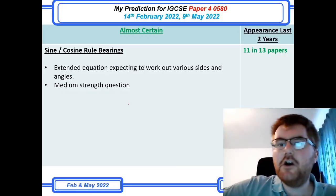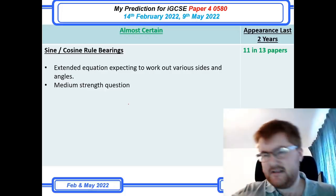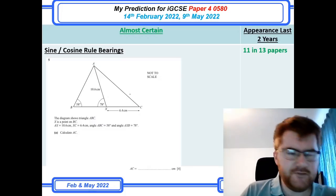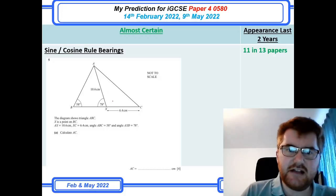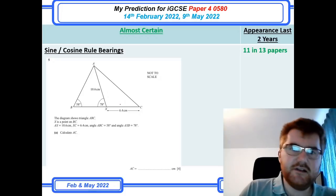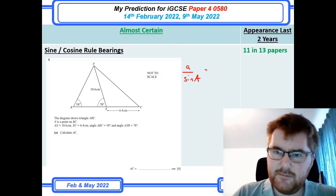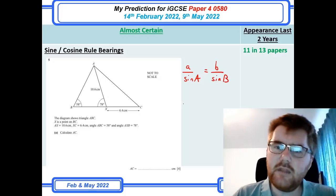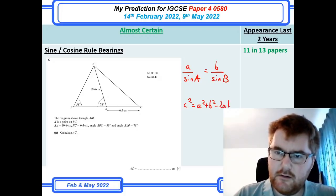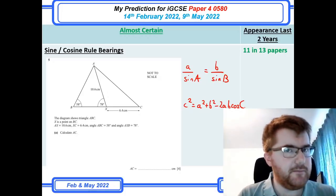On to sine and cosine rule and bearings, which is much more Paper 4 oriented. This can be a long extended question where you work out various sides and angles. A very typical question gives you some sides and angles and asks you to calculate a missing side. Remember the sine rule: a over sin A equals b over sin B. And the cosine rule: c squared equals a squared plus b squared minus 2ab cos C. Know those rules and know how to apply them to an extended question.